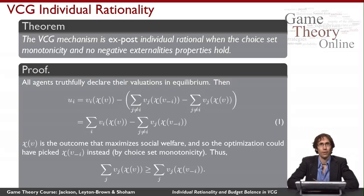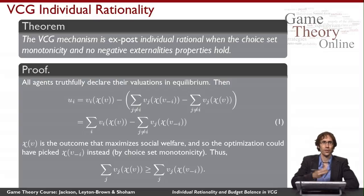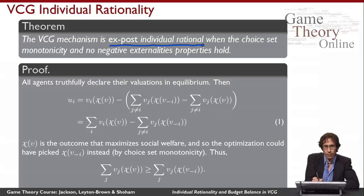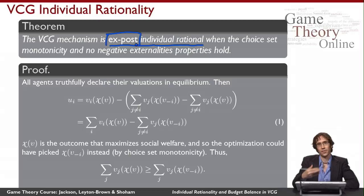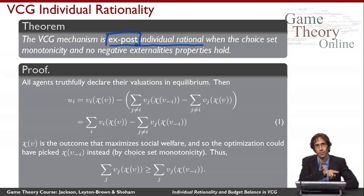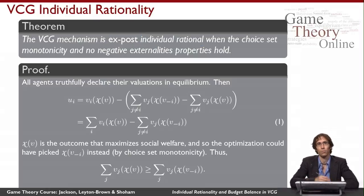The main result we want to establish is that these two assumptions — choice set monotonicity and no negative externalities — are sufficient to make the VCG mechanism ex post individually rational. Ex post individual rationality means agents always have weakly positive utility for participating in the mechanism, and this is true regardless of what valuations any of the agents have — for every realization of valuations of the agent himself and all other agents. This is the strongest kind of individual rationality, making this an encouraging result.